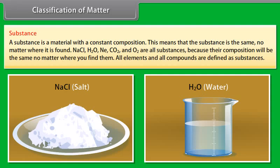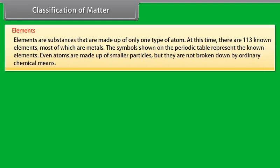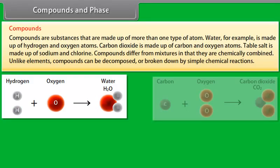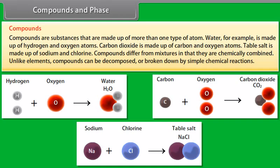A substance is a material with a constant composition. This means that the substance is the same no matter where it is found. NaCl, H₂O, Ne, CO₂ and O₂ are all substances because their composition will be the same no matter where you find them. All elements and all compounds are defined as substances.